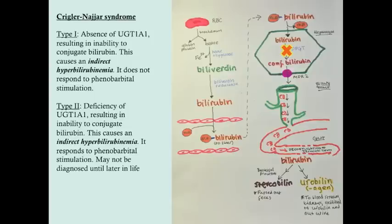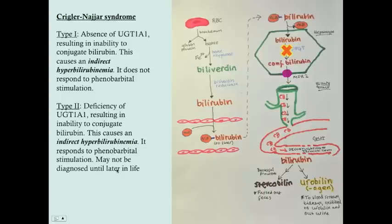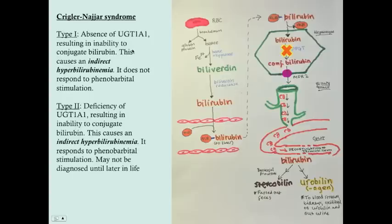With type 2, it will get better with time because as they grow older they don't need quite as much of this enzyme. You can differentiate type 1 from type 2 because in type 2 you can give the babies phenobarbital — phenobarbital will induce the UGT1A1 enzyme, and it should reduce their total serum bilirubin by around 30 to 80%. Of course if they have no enzyme at all, phenobarbital won't do anything. Type 2 is usually not diagnosed in the neonatal period because the deficiency is so minor that it doesn't really result in symptoms. Type 1, the total deficiency, always requires transplant.